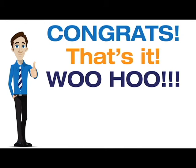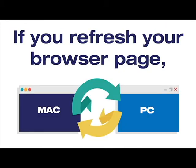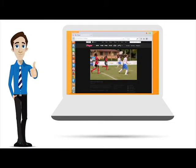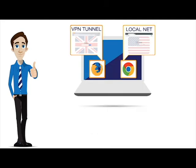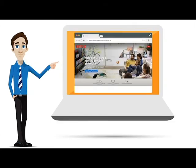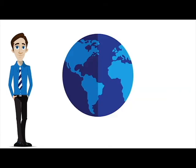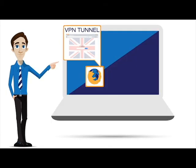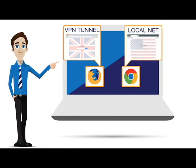That's it. Now, if we refresh our BBC iPlayer connection, we see that in Firefox, we're connected to the UK. If we go back to our Chrome page, we see that we're still in the US, because we can't see BBC iPlayer. But we can see Netflix. For your convenience, you can maintain this setup, meaning that any time you need to use UK internet, you just use Firefox, while Chrome or any other browser will be on local internet.